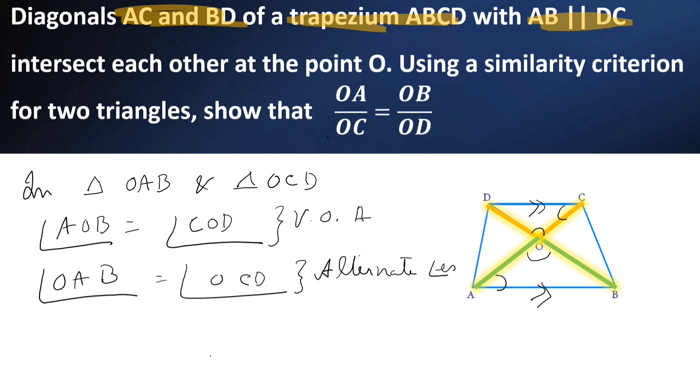We need not write angle B is equal to angle D. It is true. But we can prove that the triangles are similar by using AA criterion. Triangle OAB is similar to triangle OCD by AA criterion.